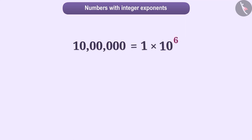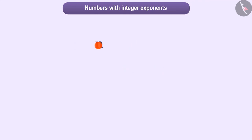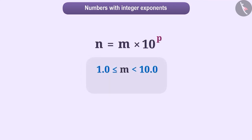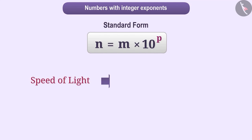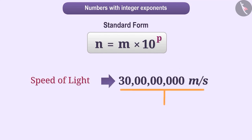In the previous class, we also learned about the standard form of a number. If we express a number N as M into 10 to the power P, where M is greater than or equal to 1.0 but smaller than 10 and P is an integer, then this form of the number is called its standard form. The standard form is helpful in shortening any number. For example, the speed of light is about 3.0 into 10 to the power 8 meters per second.